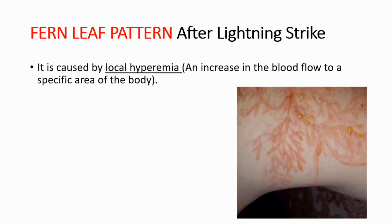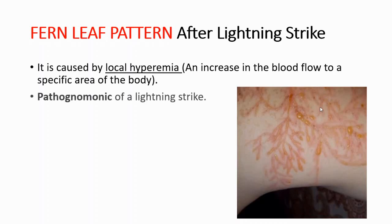What is hyperemia? Hyperemia is an increase in the blood flow to a specific area of the body. And this Fahrenheit leaf pattern is pathognomonic of a lightning strike.